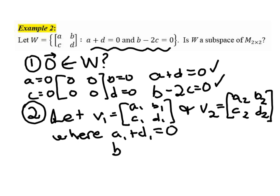And B1 minus 2C1 equals 0. Also, A2 plus D2 equals 0. Sorry, that's gotten a bit messy. And B2 minus 2C2 equals 0. So we have the conditions satisfied for these two matrices.